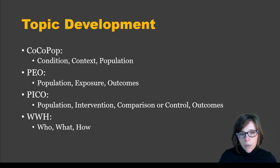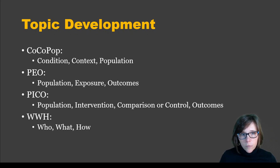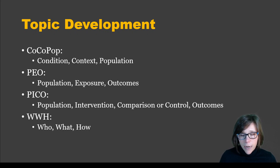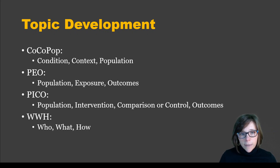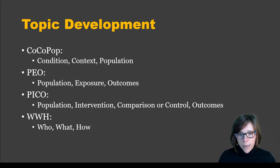When you come up with these topic frameworks and then go to search, you don't have to use every single component. For example, we're going to use a search about dyslexia and ADHD — attention deficit disorder with hyperactivity — in school-aged children. But it might make sense to just search with dyslexia and attention deficit disorder with hyperactivity, because that population is primarily school-aged children to begin with. Similarly with PICO, you don't have to search the outcomes because you don't know what they are yet and you don't want to bias your search.